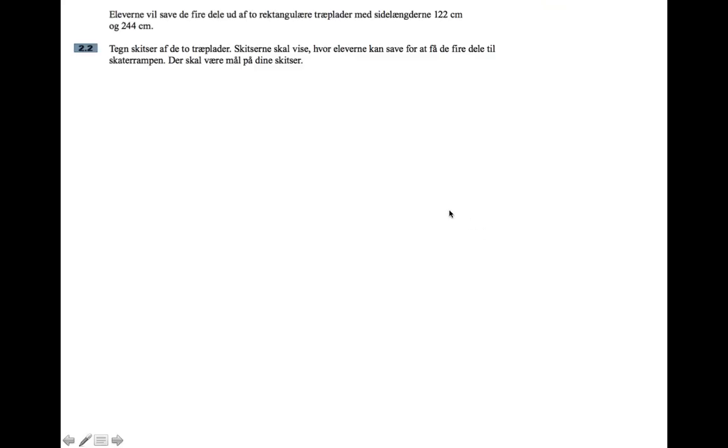Next question: the pupils want to saw the four parts out of two rectangular pieces of wood with side lengths 122 centimeters and 244 centimeters. Draw sketches of the two pieces. The sketches have to show how the pupils can saw in order to get the four parts for the skater ramp. There should be measurements on your sketches.